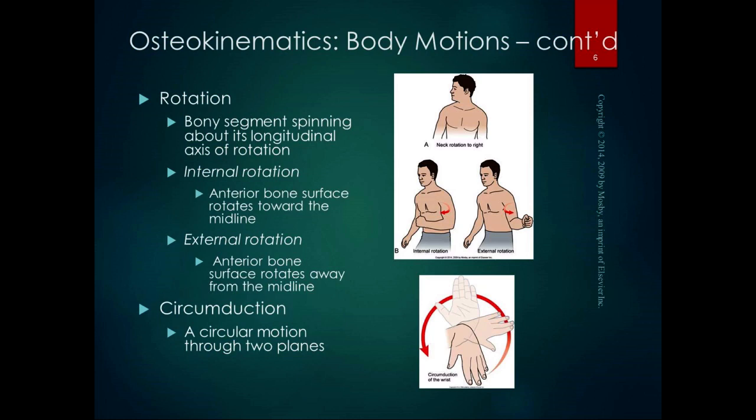Circumduction is a circular motion that moves through two planes — the sagittal and the frontal — making it a combination of flexion, extension, abduction, and adduction. A joint needs at least two degrees of freedom to perform circumduction. The shoulder, wrist, and hip can all do circumduction, but the elbow cannot, because it has only one degree of freedom.